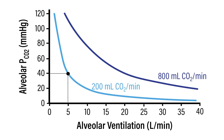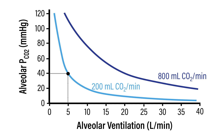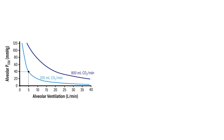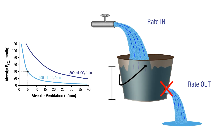Looking at the relationship between alveolar ventilation and alveolar PCO2 at a normal basal level of CO2 production — somewhere in the range of 200 milliliters of CO2 per minute — at an alveolar ventilation of 5 liters per minute, this produces an alveolar PCO2 of 40 millimeters of mercury. This is an important value the body tries to maintain under most conditions, particularly because of CO2's role in pH homeostasis. As alveolar ventilation decreases, this reduces the rate out of CO2, causing a dramatic increase in alveolar PCO2 — analogous to plugging the hole in our bucket.